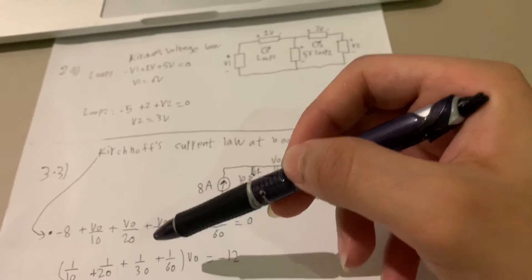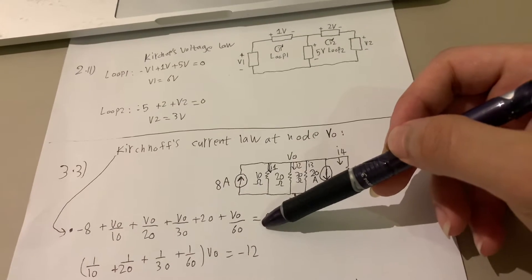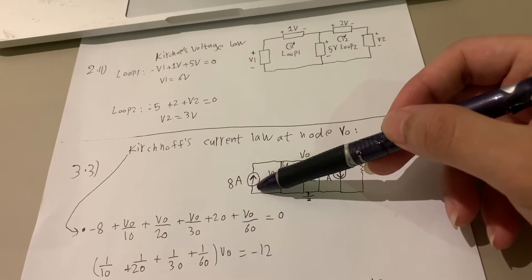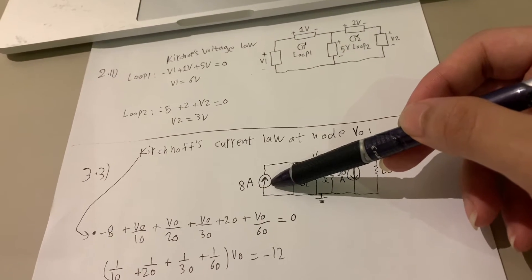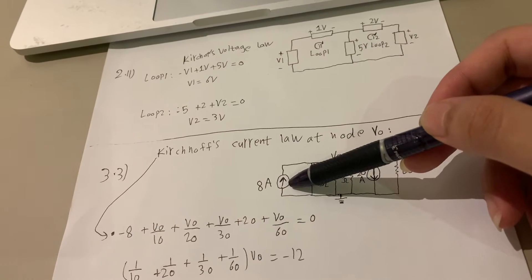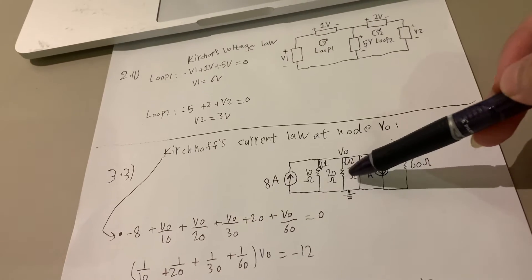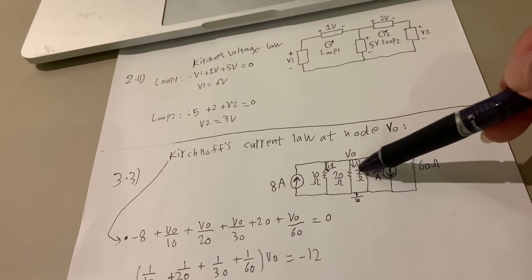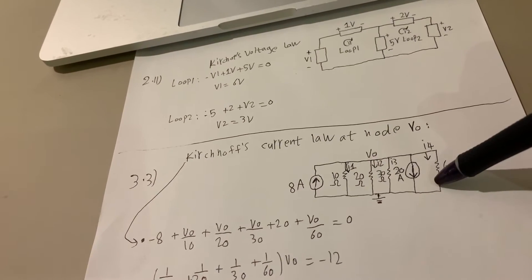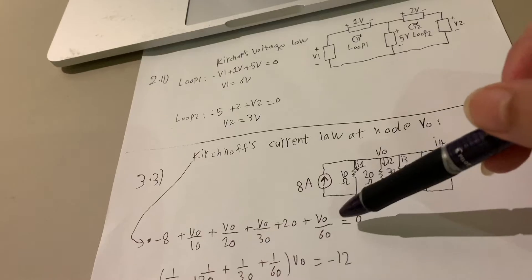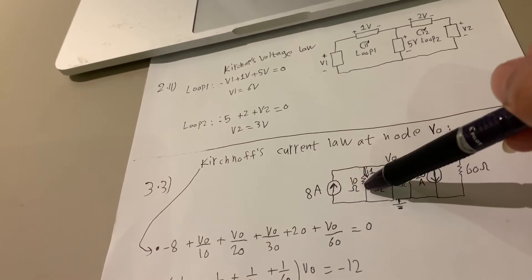The sum of currents entering the node is equal to zero. The first current is entering the V0 node, so it's going to be negative, and then for the rest of the currents, they are coming out of the node, so they are positive.